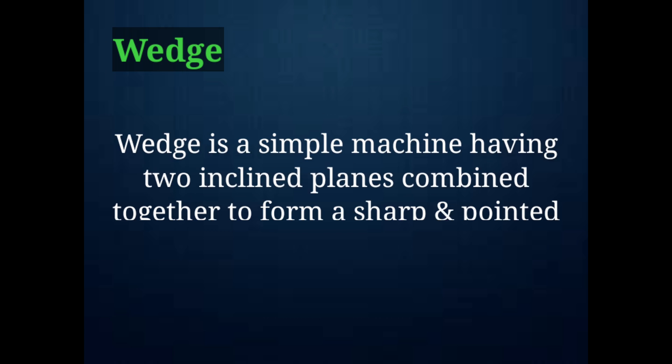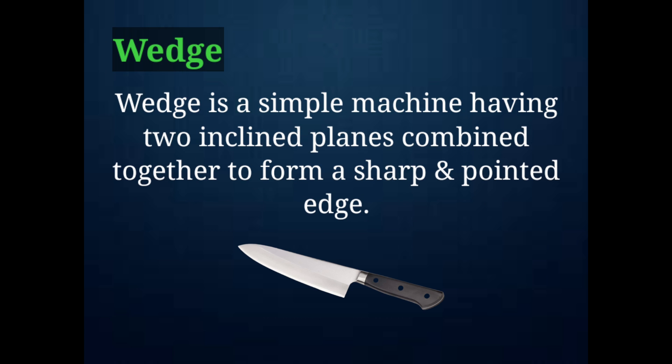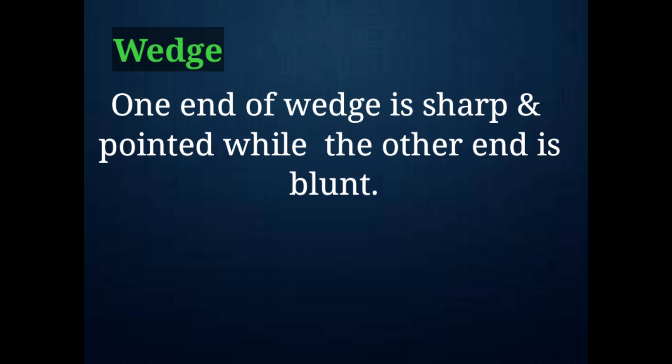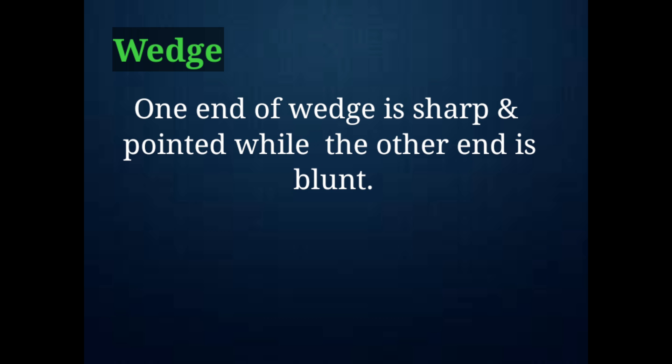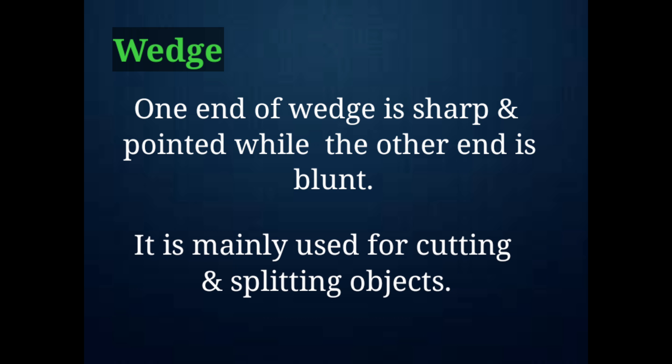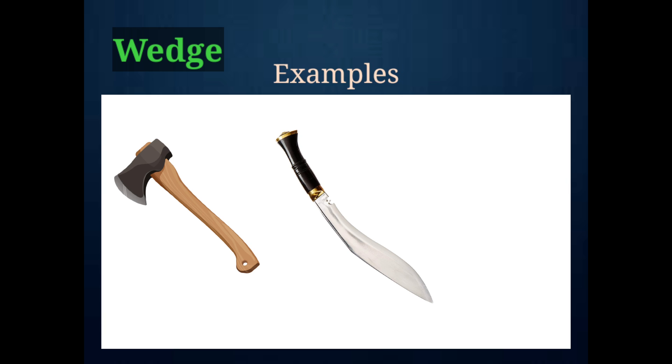Wedge is a simple machine having two inclined planes combined together to form a sharp and pointed edge. One end of the wedge is sharp and pointed while another end is blunt. It is used for cutting and splitting objects. Some examples of wedge are axe, cookery knife, etc.